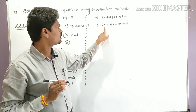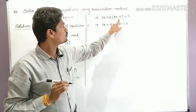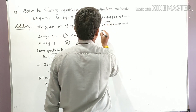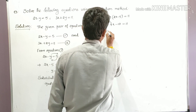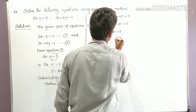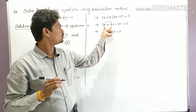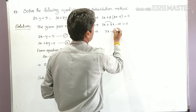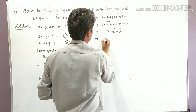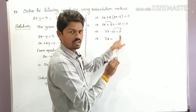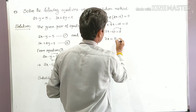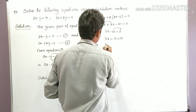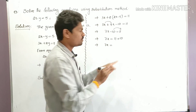Just simplify it. Write 3x as usual, 2 into 2x is 4x, 2 into minus five is minus ten, equal to eleven. Now 3x plus 4x is 7x, so 7x minus ten is equal to eleven. These two are like terms — add them: 7x minus ten equals eleven. Take minus ten to the right side: 7x is equal to 11 plus 10, which is 21.